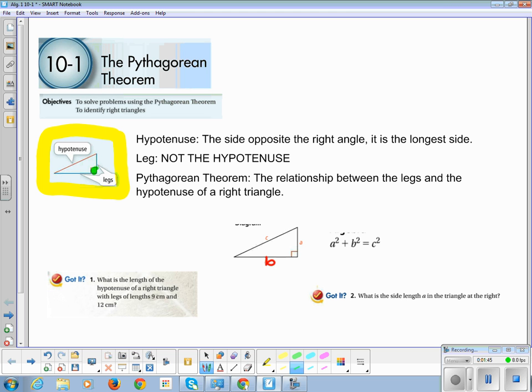So the hypotenuse is the side opposite the right angle. It is the longest side of the triangle. All the other sides are always going to be shorter than the hypotenuse.